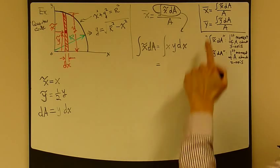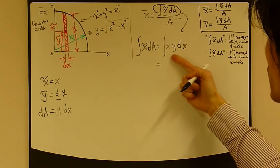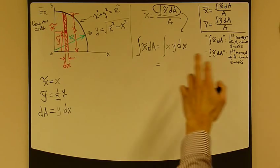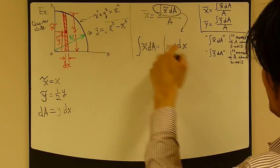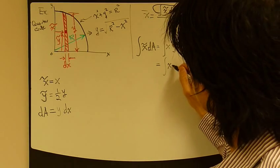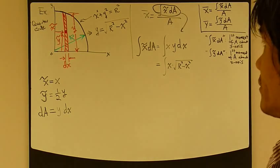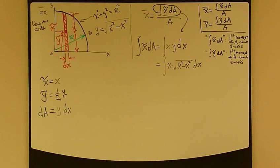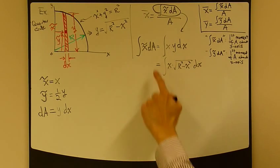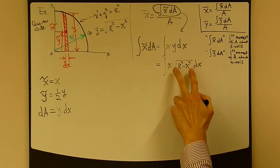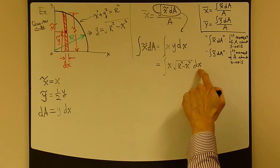Now, in order to carry out this integration, we need to replace y in terms of x. Because right now, we can't really perform this integration. So, I need to bring in this equation right here. So, y equals square root of r squared minus x squared times x dx.